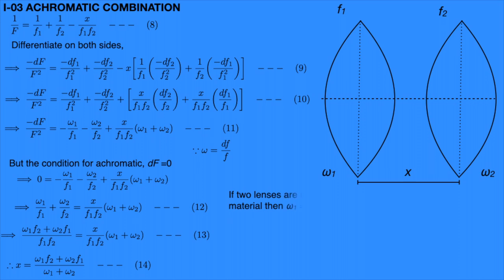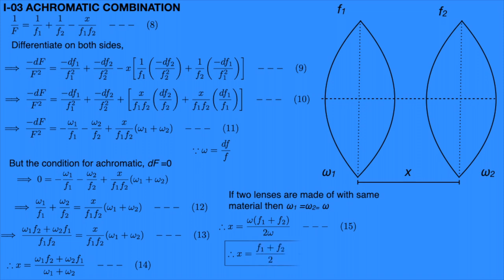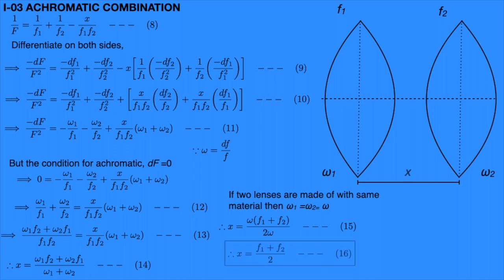For the special case where both convex lenses are made of the same material, omega1 = omega2 = omega. Substituting into equation 14: x = omega·(f1 + f2)/(2·omega), which simplifies to x = (f1 + f2)/2. This is equation 15. Hence, when two convex lenses of the same material are separated by a distance equal to the average of their focal lengths, the combination is called an achromatic combination.